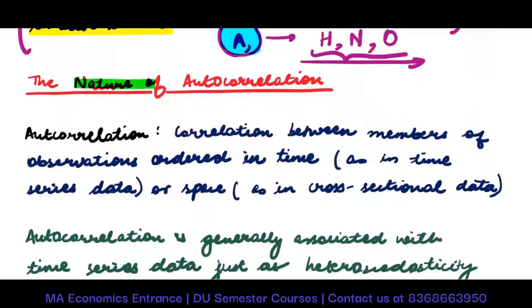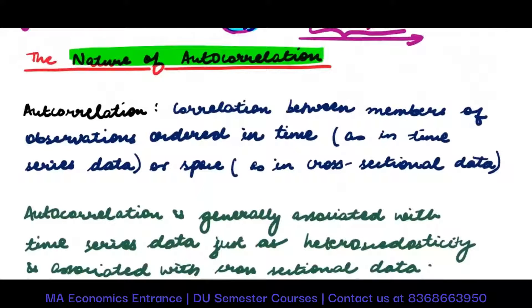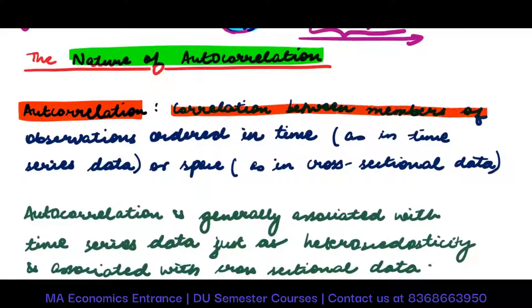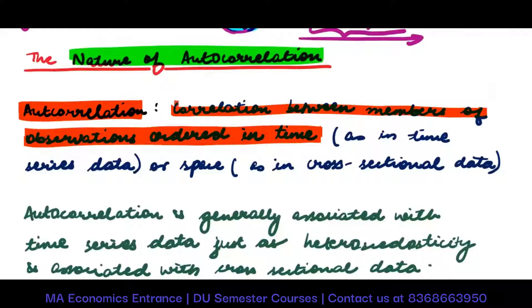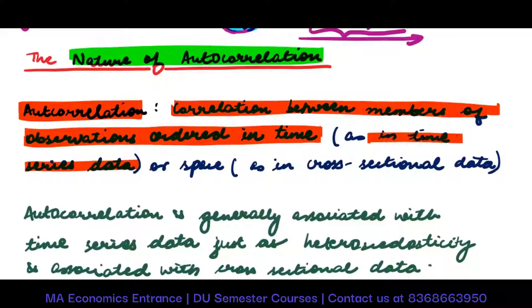The nature of autocorrelation: autocorrelation is the correlation between members of observations ordered in time. Usually, autocorrelation occurs in a time series dataset. For example, if you look at the price of a stock today, it would be a reflection of what the share price was yesterday.